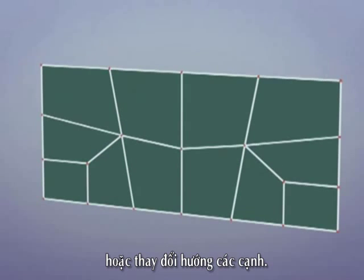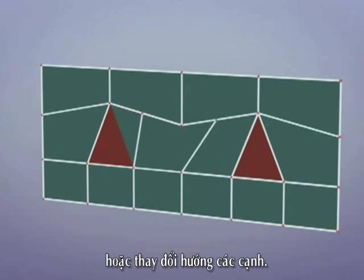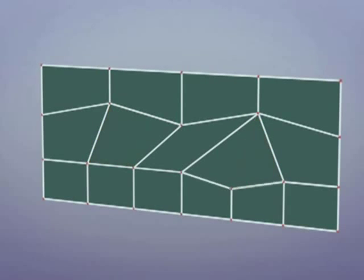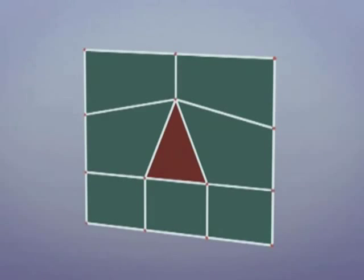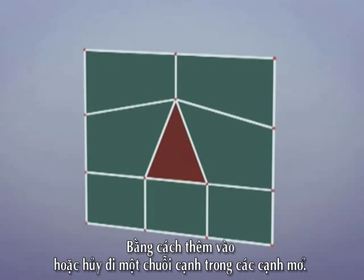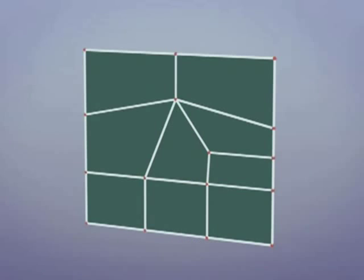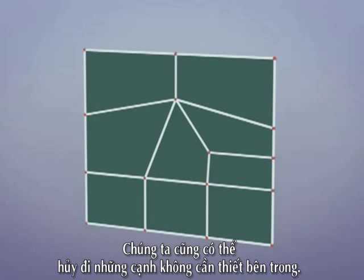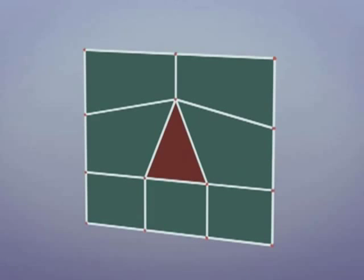Or alternately, by other edits such as turning edges. If an open edge is present, it may be used in much the same way, by adding or removing an extra loop in the open edge. We can cancel out the uneven sided face.